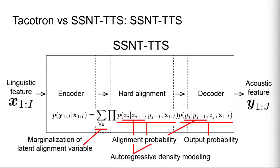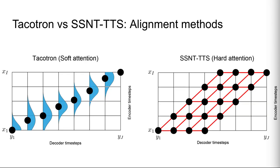Like Tacotron, SSNT-TTS consists of an encoder and an autoregressive decoder. However, it explicitly defines alignment with hard attention instead of soft attention. SSNT-TTS derives the probability of output given input by marginalizing the joint probability of alignment and output given input with respect to alignment, where alignment is a latent variable. The joint probability is factorized into alignment probability and output probability. The most prominent difference between Tacotron and SSNT-TTS is the alignment: Tacotron's alignment is the expectation of linguistic inputs, whereas the alignment of SSNT-TTS is hard, meaning a single linguistic input.